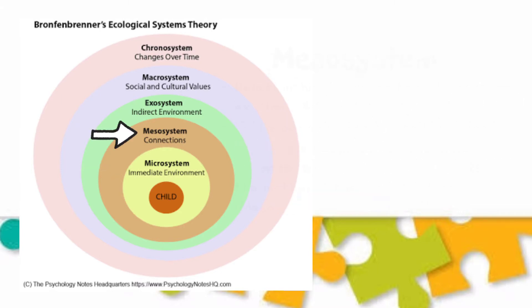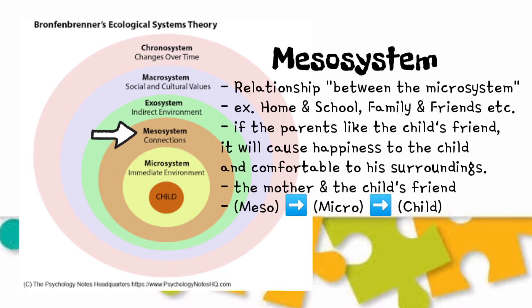The meso-system is the relationships between the micro-systems. For example, home and school, family and friends. In some instances, if the parent likes the child's friends, it will cause the child to be happy or comfortable with his surroundings. It is the relationship between persons in micro-systems — the mother and the child's friend.